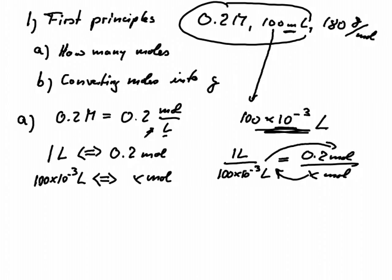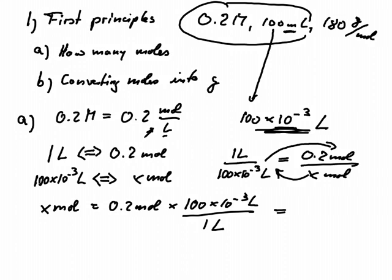We bring the fraction to that side. So we've got x mole equals 0.2 mole times 100 times 10 to the minus 3 liter divided by 1 liter. And when we calculate that, we get 0.02 moles. So we need 0.02 moles.